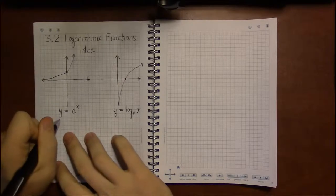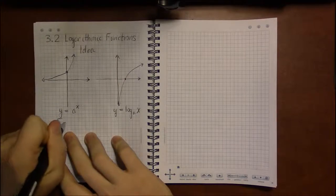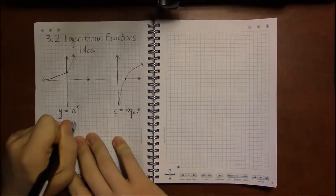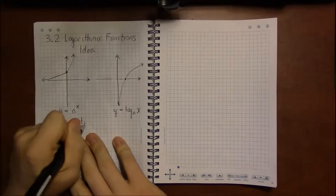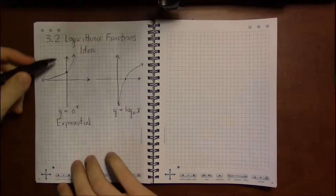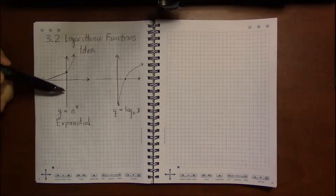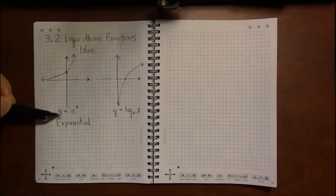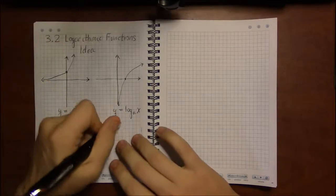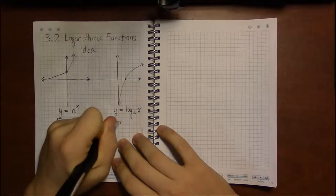So exponential functions and logarithmic functions turn out to be what we call inverses of each other. They undo each other, like addition and subtraction, multiplication and division, squaring and square roots. Exponentials and logarithms undo each other.